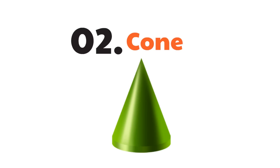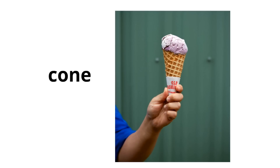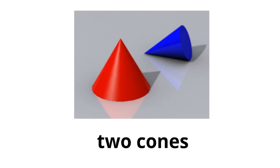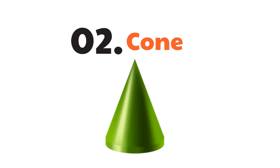Our second 3D shape is the cone. The cone is a really cool shape with a circle as the base and it all comes up to one point called a vertex. A great example is an ice cream cone — flip it upside down and you can see the circle base coming up to one vertex. Traffic cones are also wonderful examples of this shape.